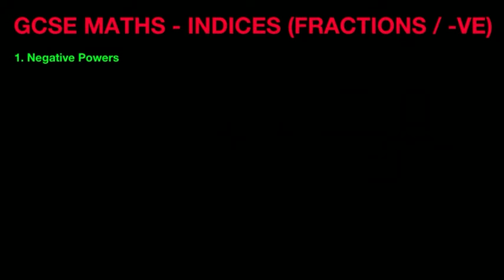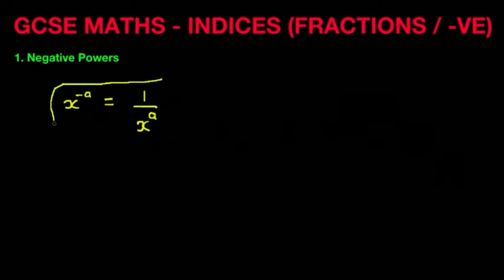Negative powers. Now the rule here is, if we have x to the power of minus a, that simply becomes 1 over x to the power of a. So x to the power of minus a equals 1 over x to the power of a. Make sure that you remember this rule.